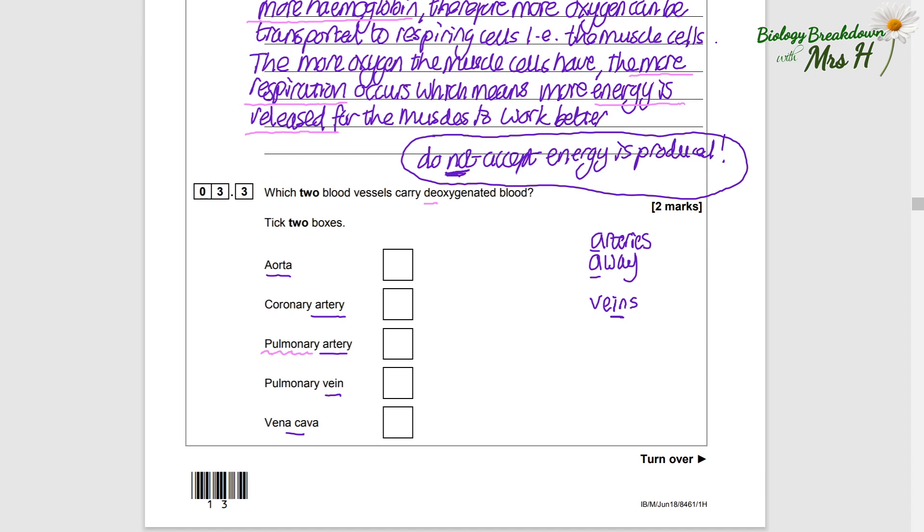Pulmonary means lungs, and we know that arteries take blood away from the heart. Meaning if it's a pulmonary artery, it's taking blood away from the heart and to the lungs. There the blood will fill up with oxygen, so in the pulmonary artery there is no oxygenated blood, it's deoxygenated.